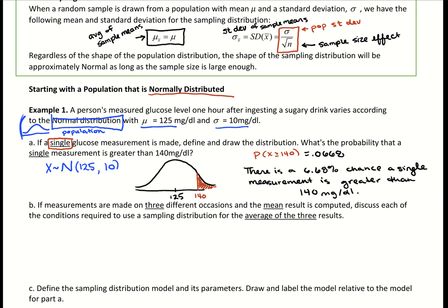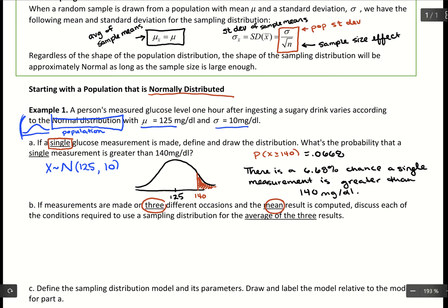Now, what if we took a sample? If measurements are made on three different occasions and we collect the mean result of those three occasions, we need to discuss the conditions — which means checking our central limit theorem. The central limit theorem has three pieces we need to check each time: independence, randomization, and sample size.